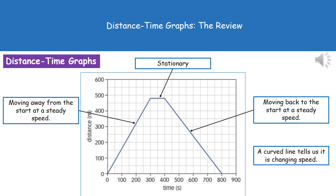When we get to about 300 seconds we can see this horizontal line. A horizontal line on a distance-time graph tells us the object is stationary, it's not moving. The reason we know that is the time is still increasing but the distance is not.